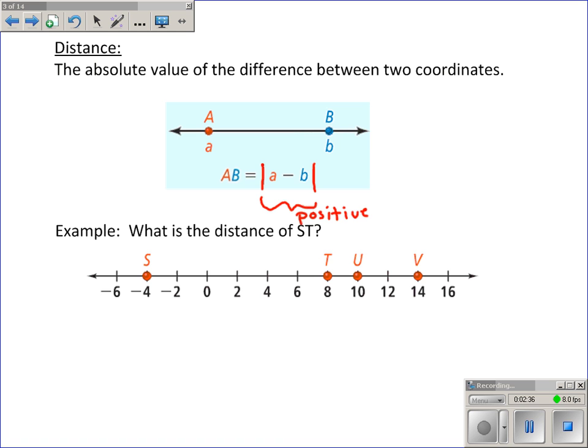So what is the distance of ST, or the distance between points S and T? Let me show you first on the picture. I think that'll make a little more sense. The distance from here to here is 2, 4, 6, 8, 10, 12. So the distance between S and T is 12.